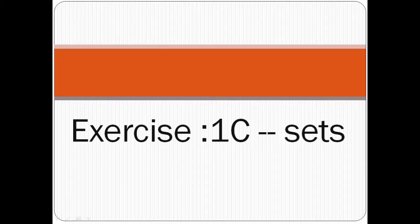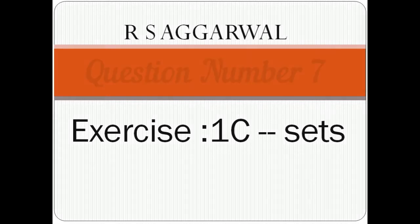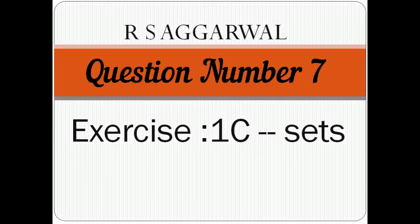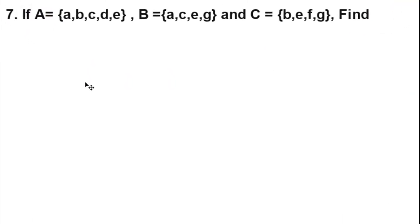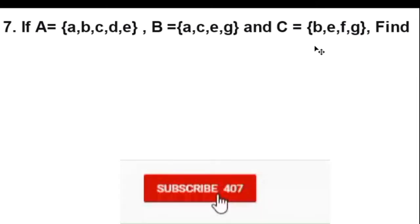This video is the solution of Exercise 1C, Sets, from R. Sekerwal book, Class 11, question number 7. Let's start. Question number 7 is: if set A equals {A, B, C, D, E}, set B equals {A, C, E, G}, and set C equals {P, E, F, G}. Then we have to find the following questions.